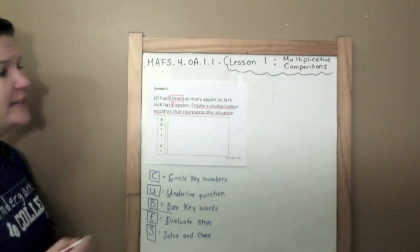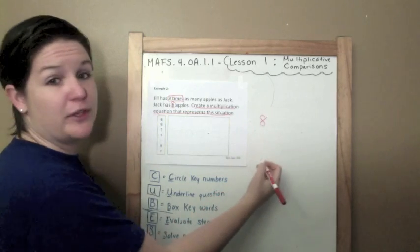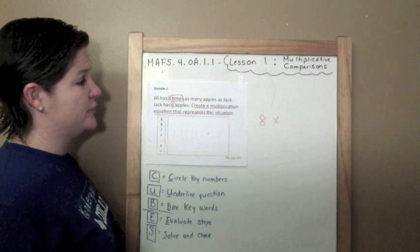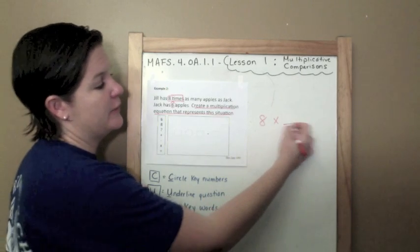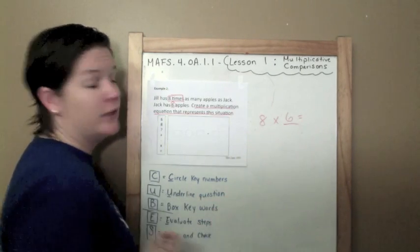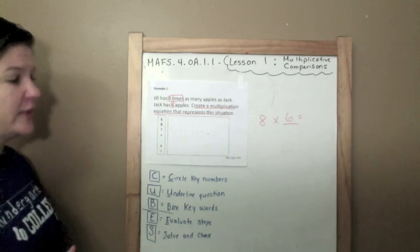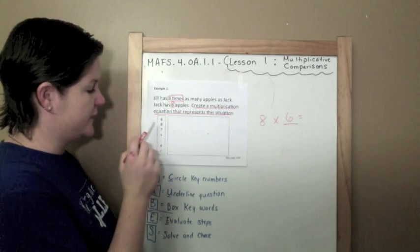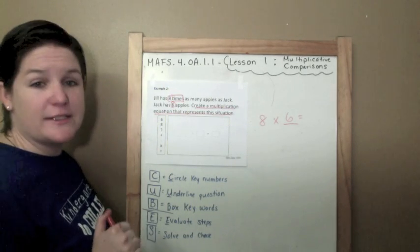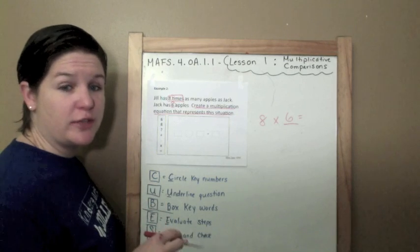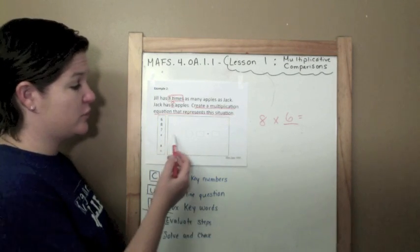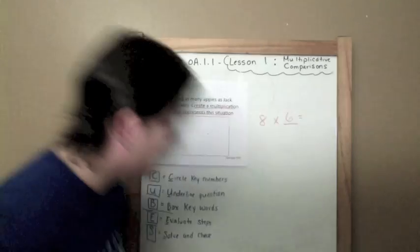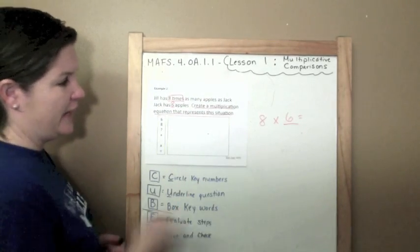Back to this question. So Jill has eight times—there's eight times that word again. We know that means eight times as many apples as Jack. And Jack has how many? Six apples. Okay. And I'm creating a multiplication equation. So if you look over here, I see six, eight, question mark, plus minus multiplication and division. So what I'm doing is I'm just creating an equation in this box. I'm going to change color so you can see a little bit better.